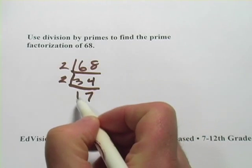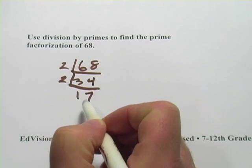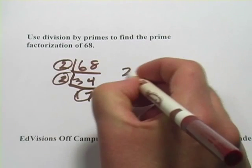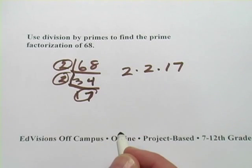And at that point I might need to double check to see whether 17 is prime. It is. So I've got 2 and 2 and 17. That's my prime factorization of 68.